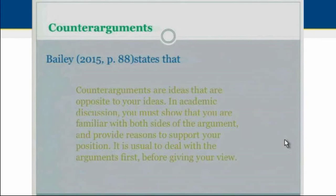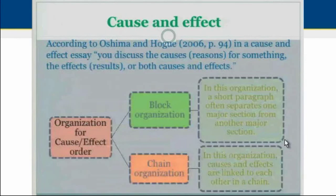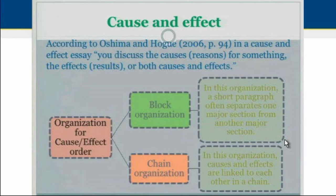You may also be required to write a cause-and-effect essay. In this type of essay, you discuss the causes or reasons for something and also the effects, results, or both. There are two types of organization that can be used: block organization, in which a short paragraph often separates one major section from another, and chain organization, in which the causes and effects are linked to each other in a chain.